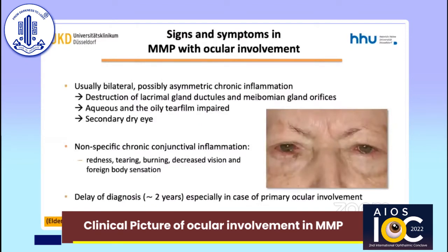Although ocular involvement in MMP can occasionally be unilateral, it is usually bilateral. In the beginning, the disease often presents with non-specific symptoms of chronic ocular surface inflammation. The initial signs and symptoms are very similar to dry eye. Patients complain of redness, tearing, burning, decreased vision, and foreign body sensation. This initially non-specific presentation may lead to under-recognition of the disease and to delay of diagnosis.